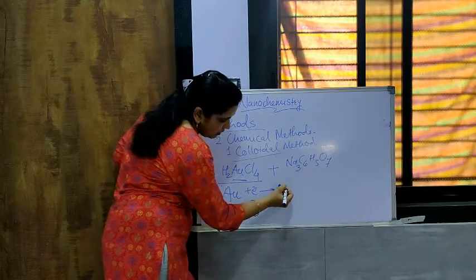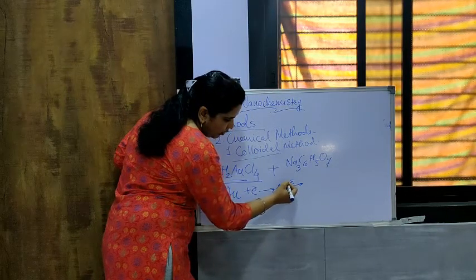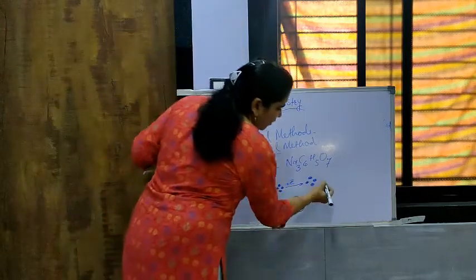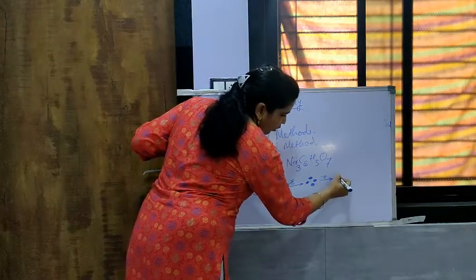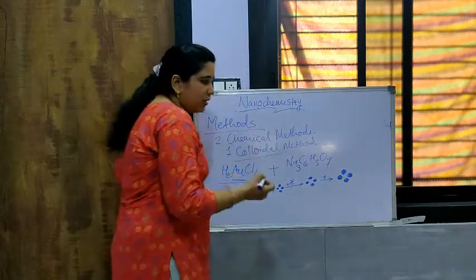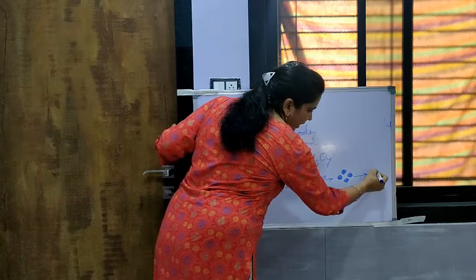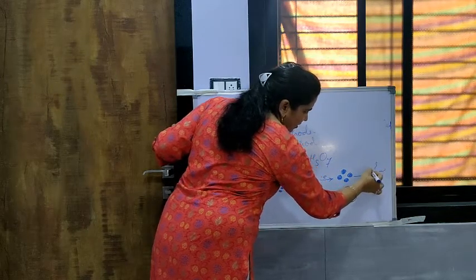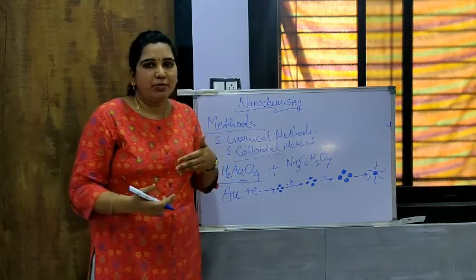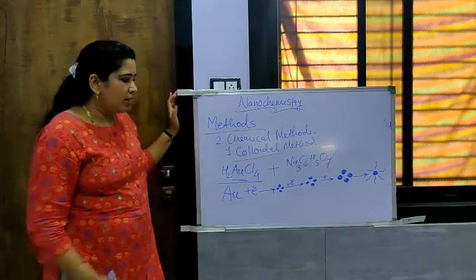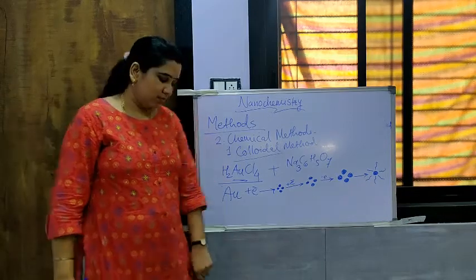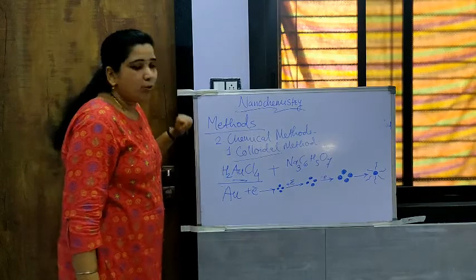At first it was a very small size, then by accepting electrons it becomes a larger size. Then again, different numbers of electrons are accepted to form a very large-sized aurum, or gold nanoparticles. At last, these nanoparticles are stabilized by citrate ions. In this way, nanoparticles of gold are formed by reduction. This is the colloidal method of preparing chemical-type nanoparticles.